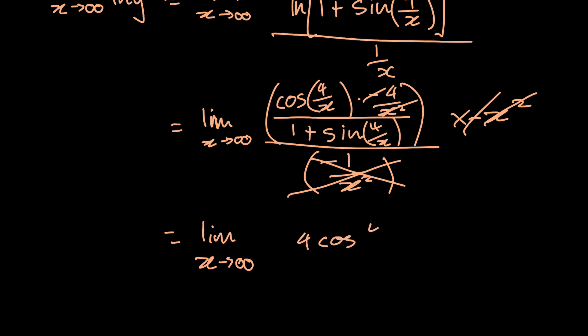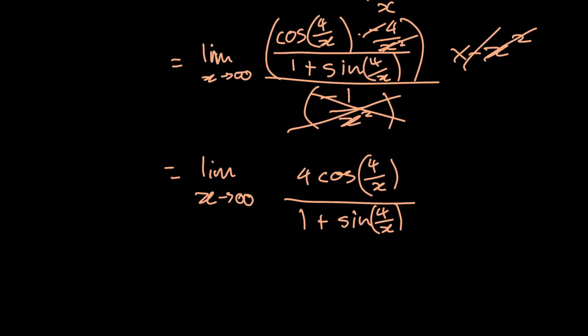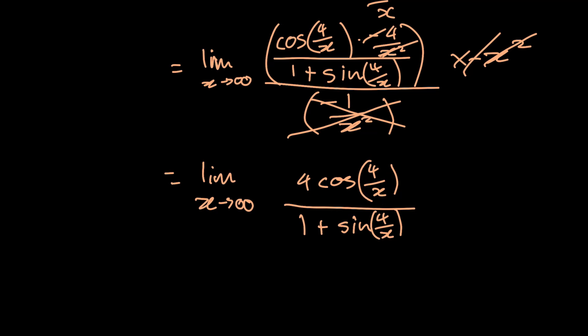We'll have four times cosine of four over x, all over one plus sine of four over x. Now let's evaluate this limit as x approaches infinity. What's inside the cosine is four over x — as x becomes infinitely large, that fraction approaches zero. So we have four times cosine of zero, which is four times one, so the numerator is four. In the denominator, sine of four over x also approaches sine of zero, which is zero, giving one plus zero. So this limit equals four.